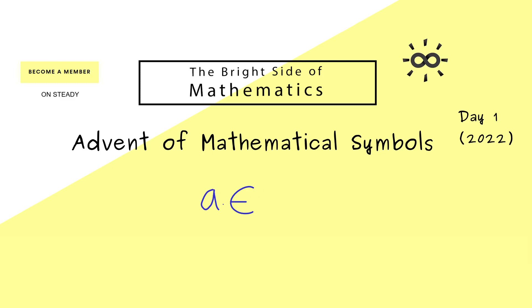You use it as a binary operator where we have a left-hand side and a right-hand side. On the right-hand side, you find a given set, and on the left-hand side, an element of this set.